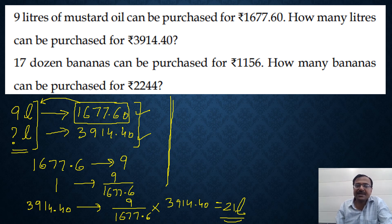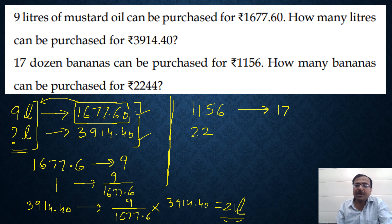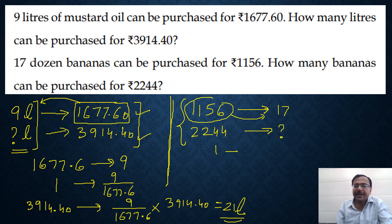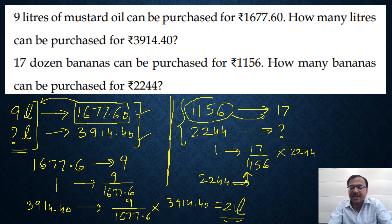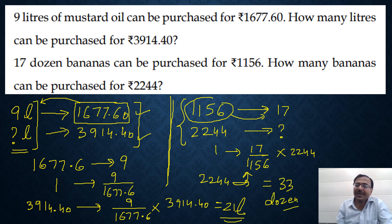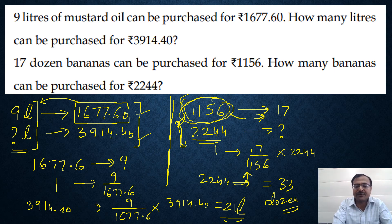In the second question: in ₹1156 you can purchase 17 dozen bananas. Now, if you have ₹2244, how many dozen bananas can you purchase? Very simple — take 1156 to the denominator. So in 1 rupee you get 17 upon 1156 bananas, and then multiply by 2244 to get your answer. The answer is exactly 33 dozen bananas. The two amounts given: one goes to the denominator, the other is multiplied by that to get the final answer.